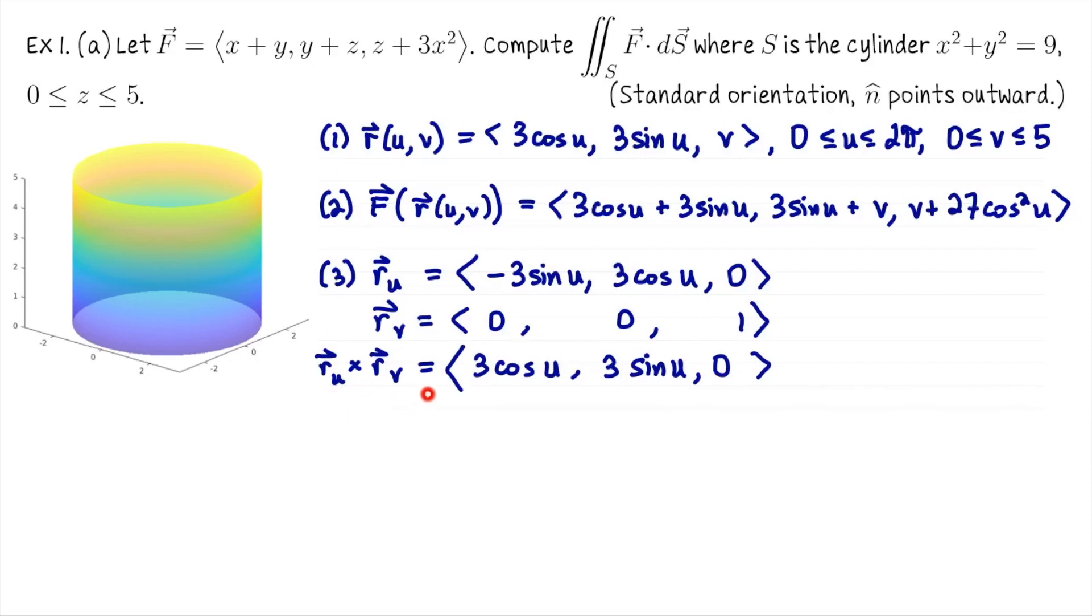Got to take their cross product. When you do that, R_u × R_v is ⟨3cos u, 3sin u, 0⟩. That third coordinate should make sense because if you imagine an outward pointing normal vector here, it's going to be parallel to the xy plane. This is a cylinder whose central axis is the z axis, so it's not going to point up or down the z axis. The question is, are we pointing out or in? We're pointing out, this is correctly oriented. This is just the x coordinate, the y coordinate, the position vector from the origin.